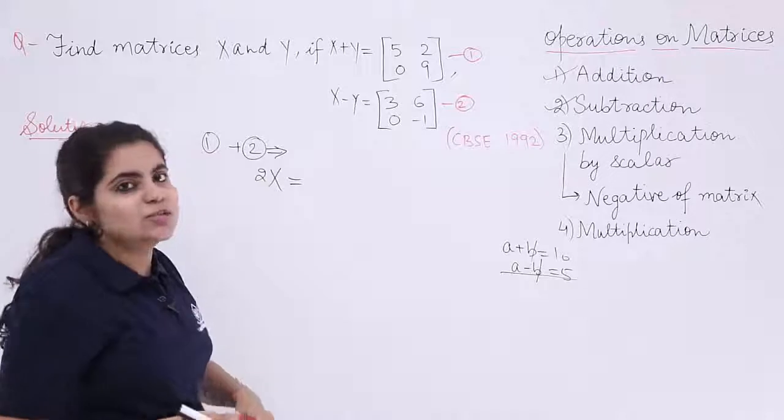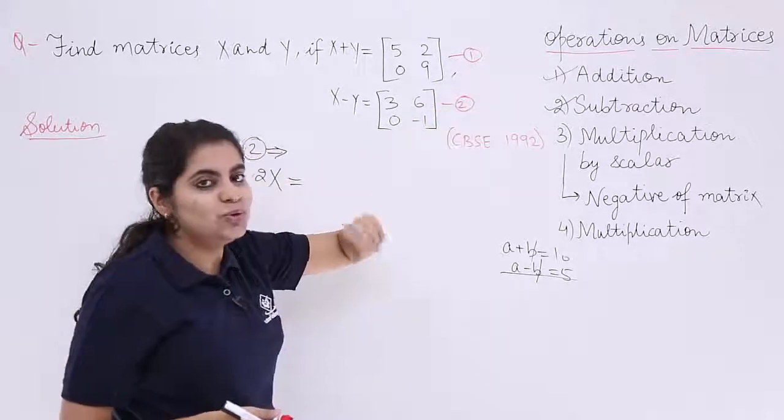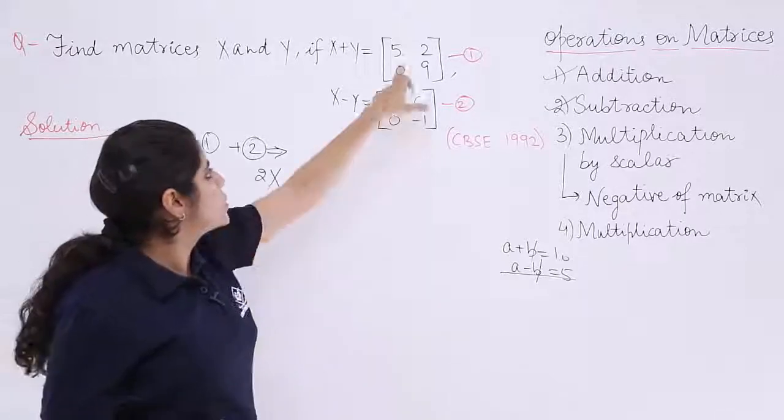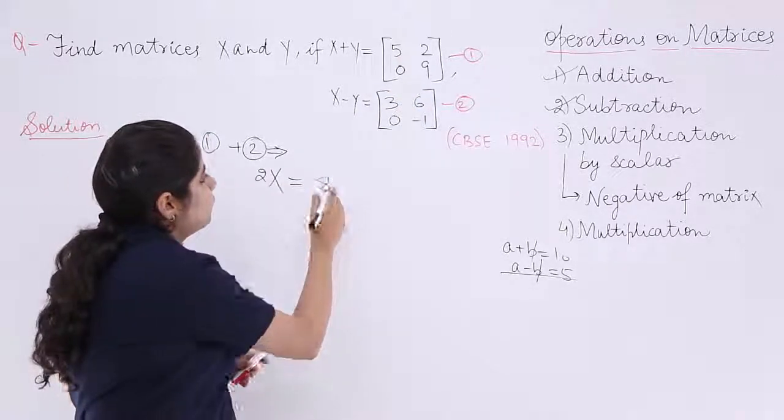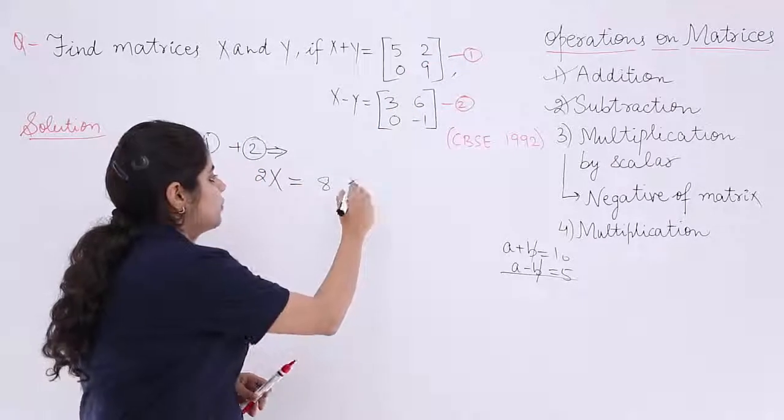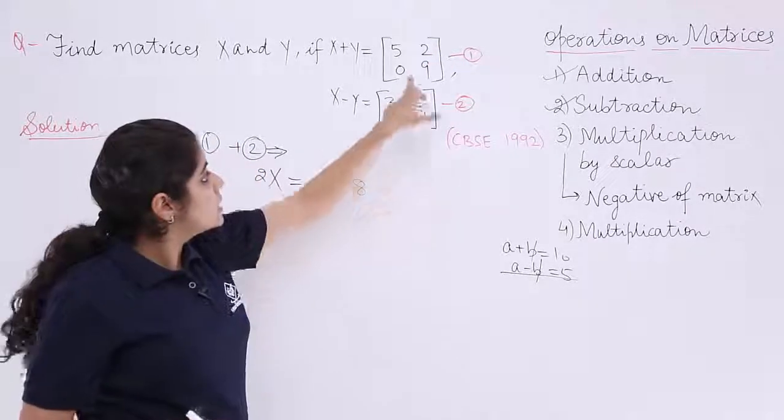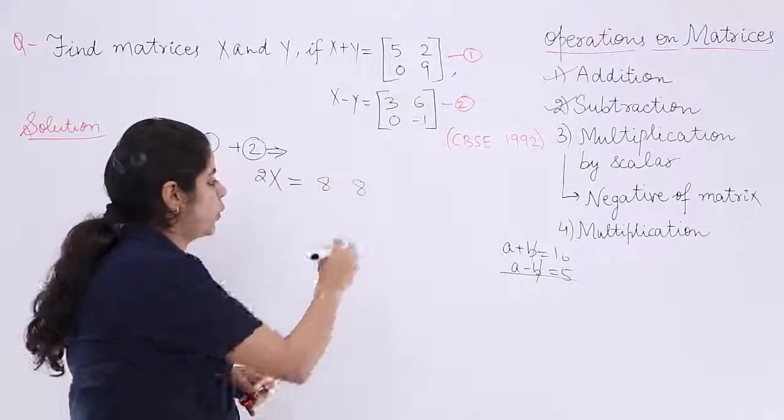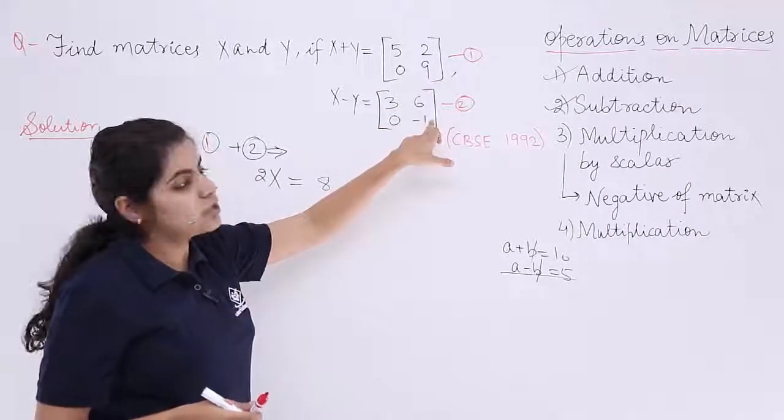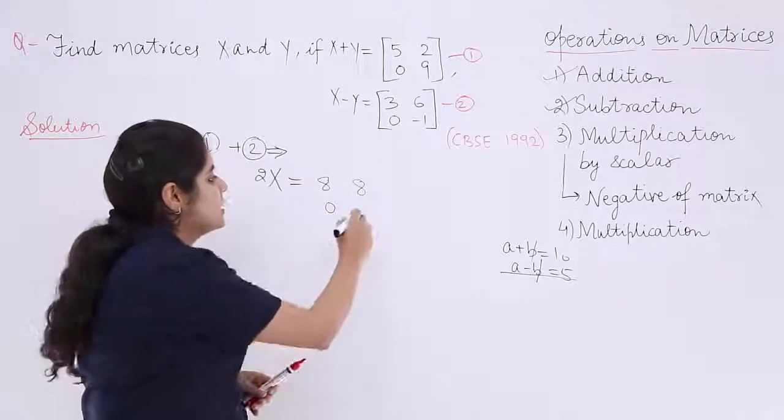And here also I have to do 1 plus 2. So it is each element to be added with the respective position element. So 5 plus 3 is 8, 2 plus 6 is again 8, 0 plus 0 is 0, and last but not the least, 9 plus minus 1, that means 9 minus 1 is 8.